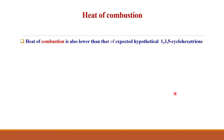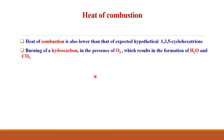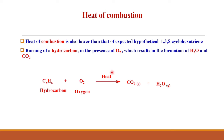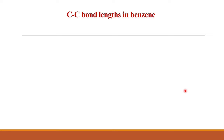Let us move to the heat of combustion. The heat of combustion is also lower than that of the expected hypothetical 1,3,5-cyclohexatriene. The heat of combustion is the amount of heat evolved when one mole of a hydrocarbon is burned, resulting in the formation of carbon dioxide and water. Here is the general representation for the burning of a hydrocarbon in the presence of oxygen, which gives rise to carbon dioxide and water. The heat of combustion for benzene is lower than that of the expected hypothetical structure.